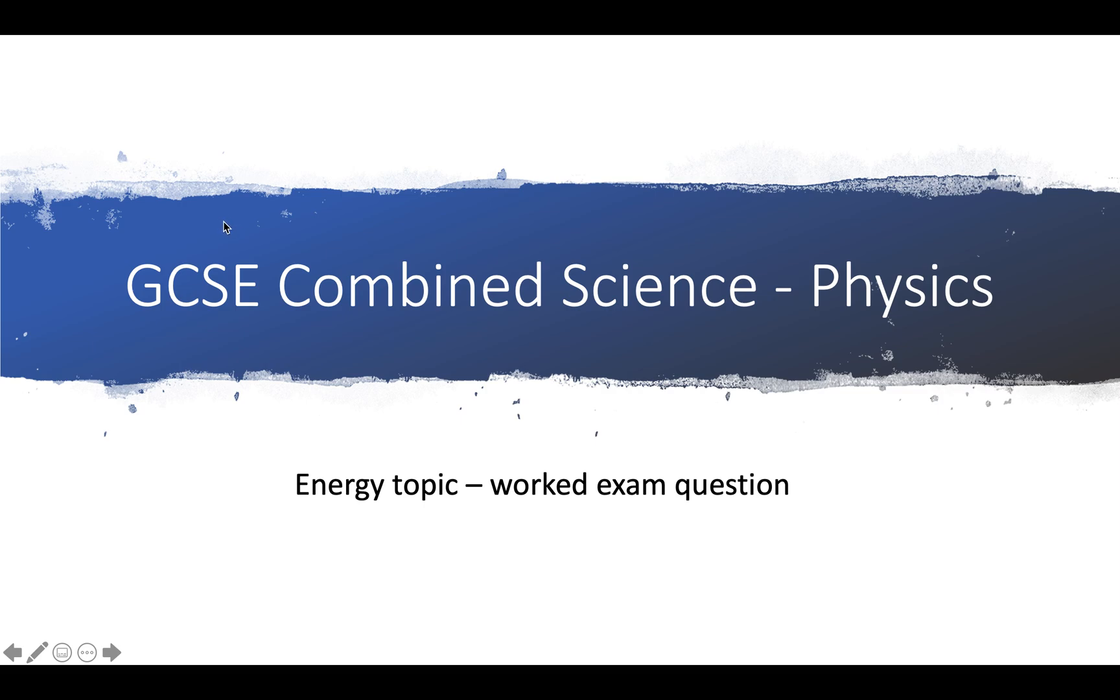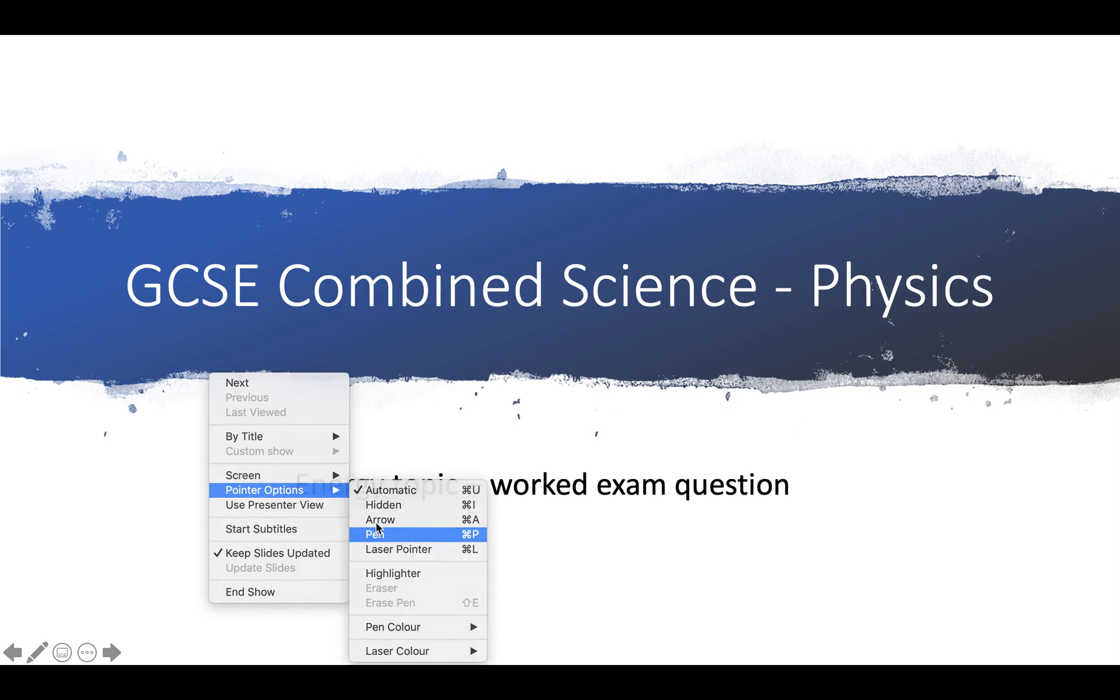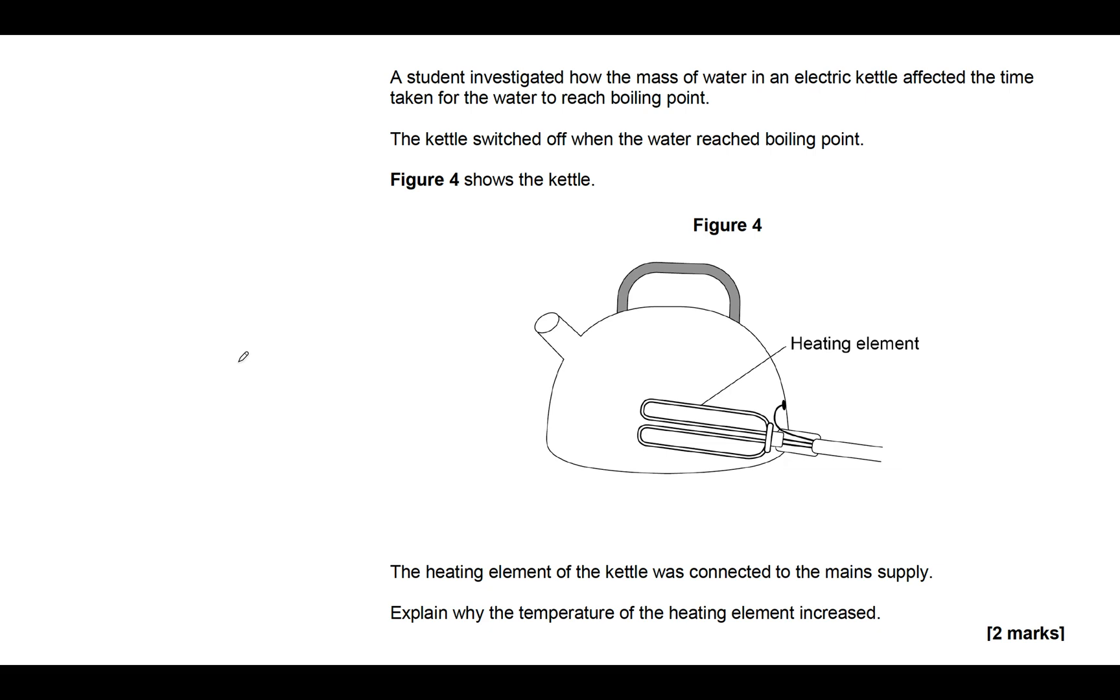Okay, welcome to this session where I'm going to do some revision of combined science physics, the energy topic, and I'm going to do that by going through a worked exam question. In this question, we're asking about a kettle that is being heated up. It describes an experiment which we'll come back to, and then it says the heating element of the kettle was connected to the mains supply.